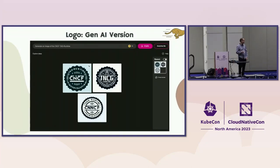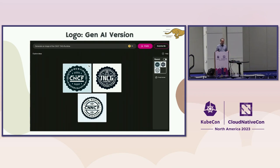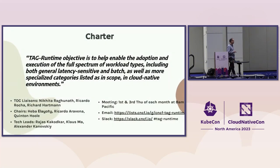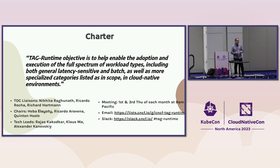Just for fun, I also went to an image generation site — a generative AI image logo creator — and it did actually create three different versions of our logo. They're not actually very close to what our actual logo is, but if you want to get started, it's something. There's a lot of talk on generative AI, but what TAG Runtime is about is helping different users and communities use cloud native technologies when it comes to workloads — batch-type workloads, high-performance workloads that run on multiple machines, or latency-sensitive workloads like microservices — all in the cloud native context.